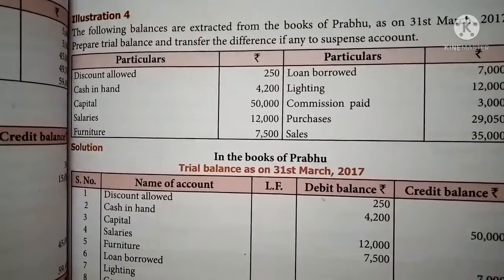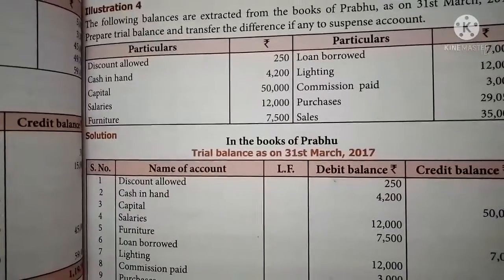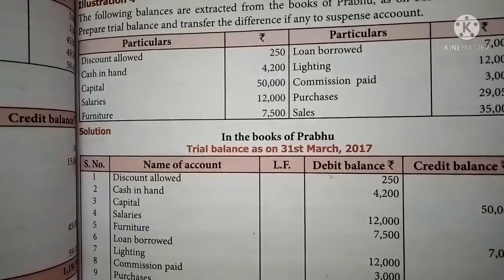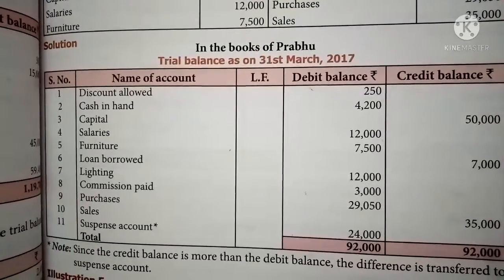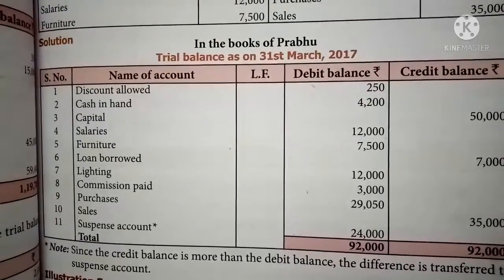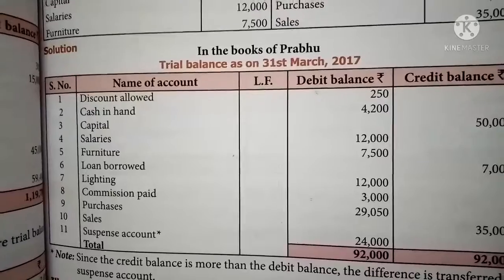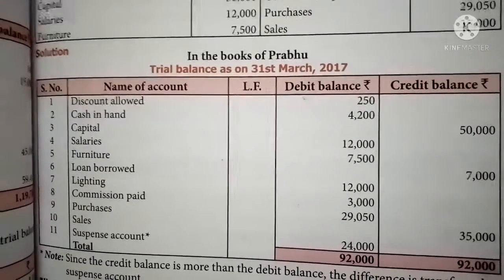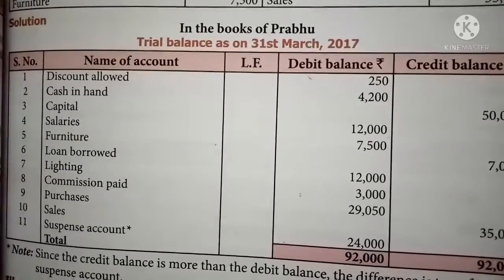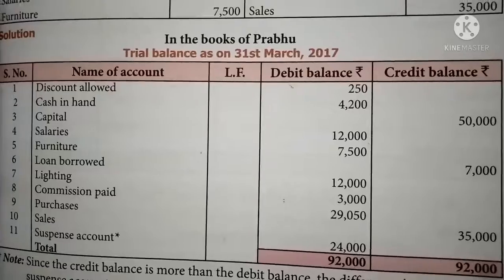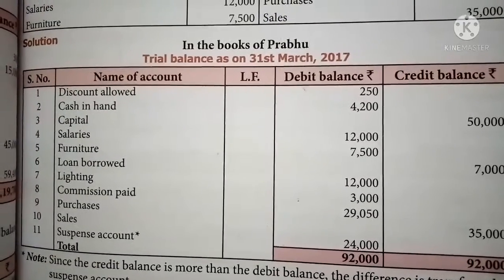With the help of the specimen you can identify the correct column and then prepare it in ruled sheets. First write the heading — 'In the books of Prabhu' — and write 'Trial Balance as on 31st March 2017'. Make the necessary columns, then write all the ledger balance names in the particulars column. Write the amount in either the debit balance column or the credit balance column as per the specimen — all expenses and property items in the debit column, all liabilities and revenue items in the credit column.